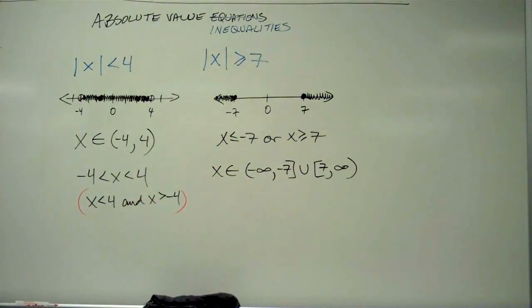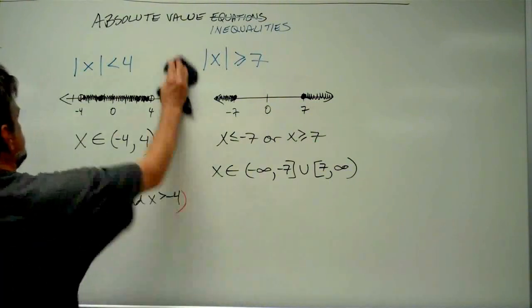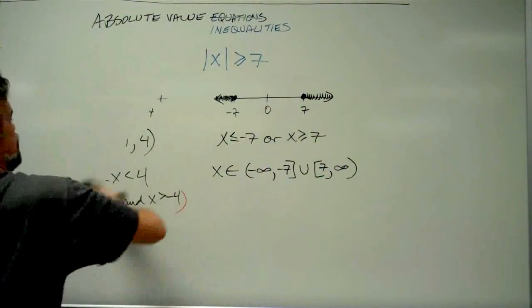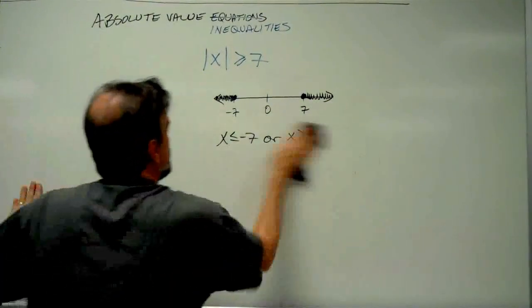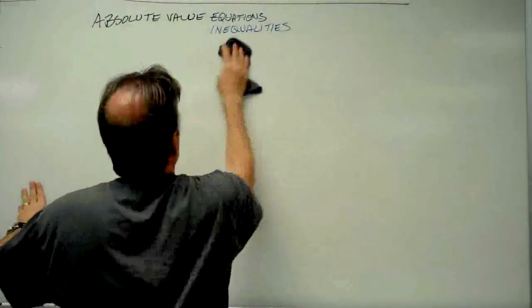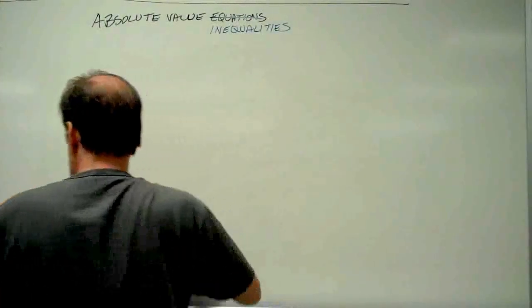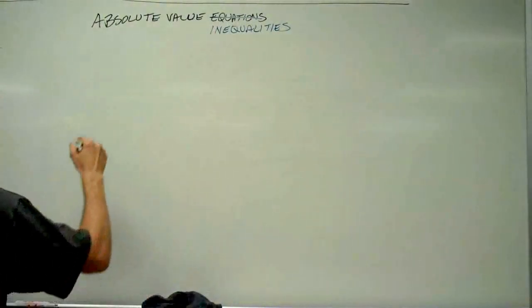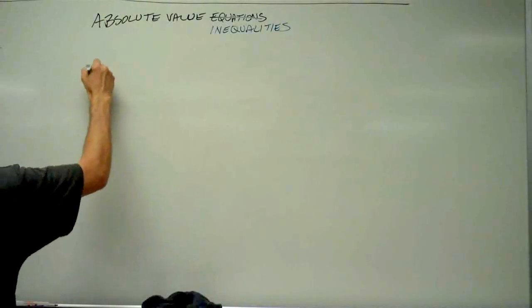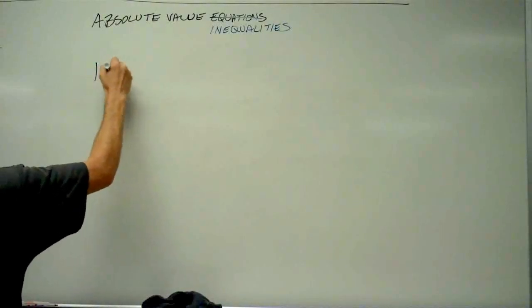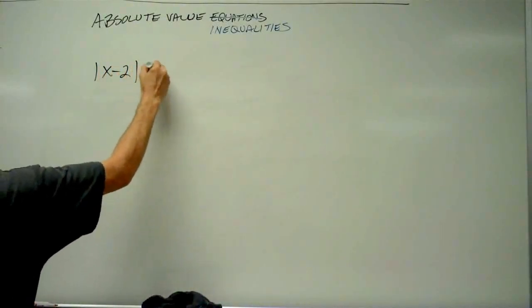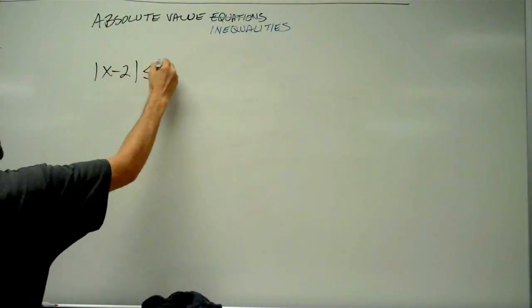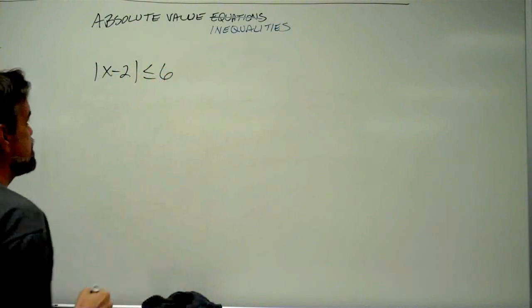Now let's look at a problem or two. Let's say we've got the absolute value of x minus 2 is less than or equal to 6.